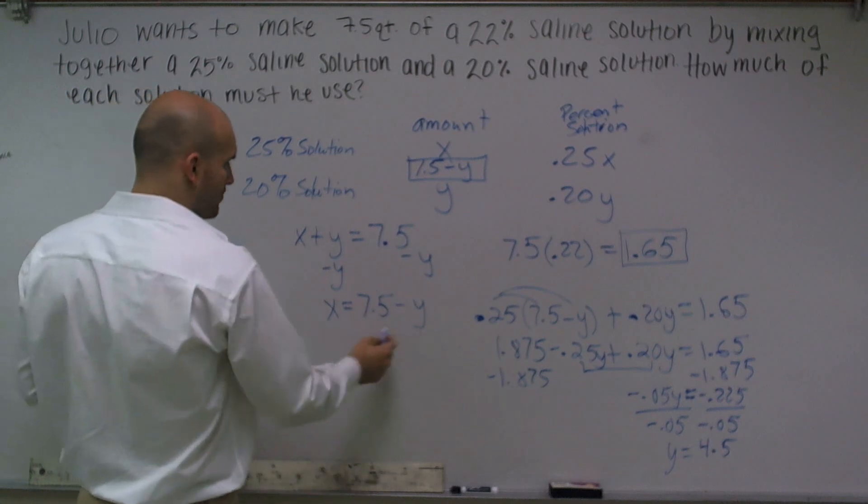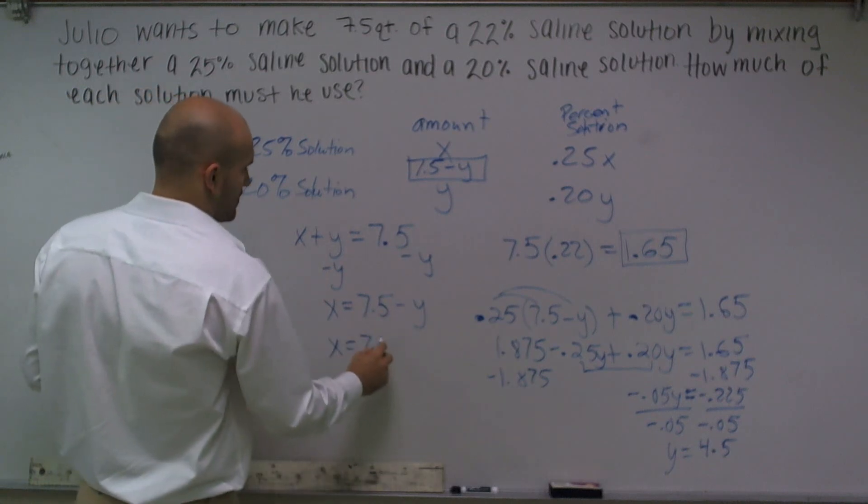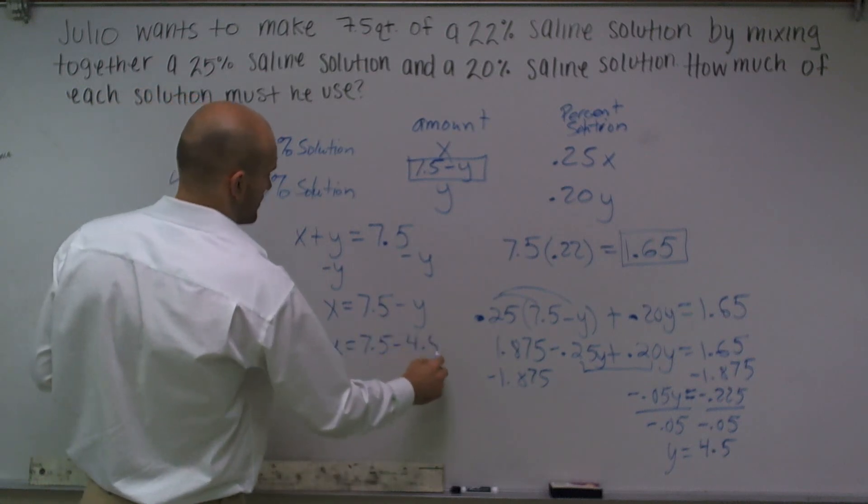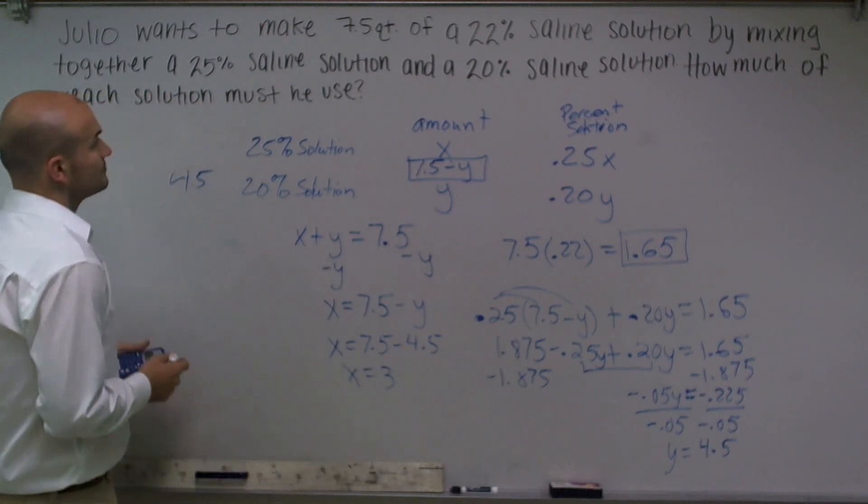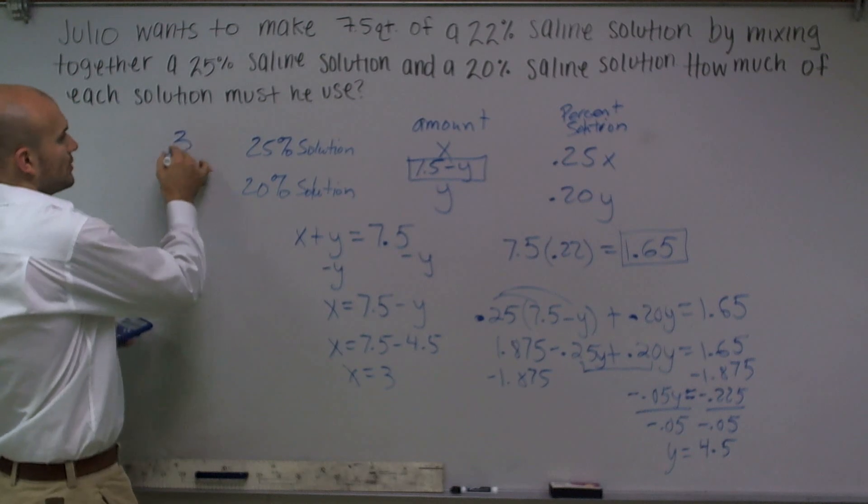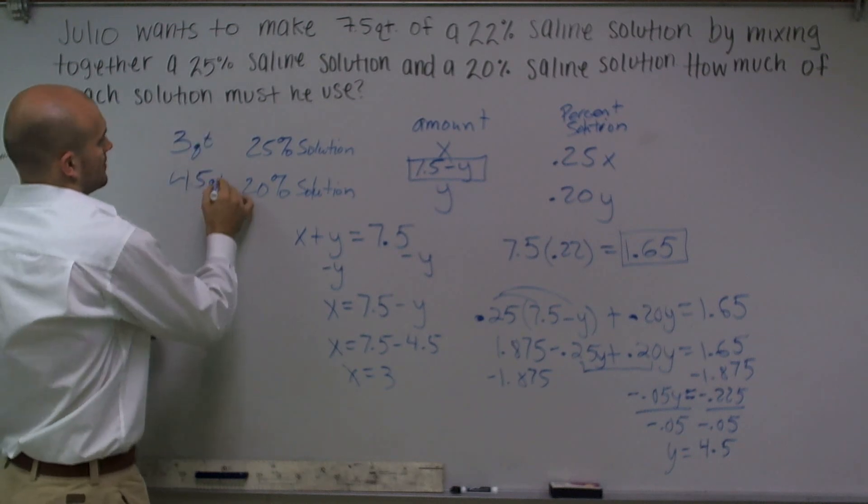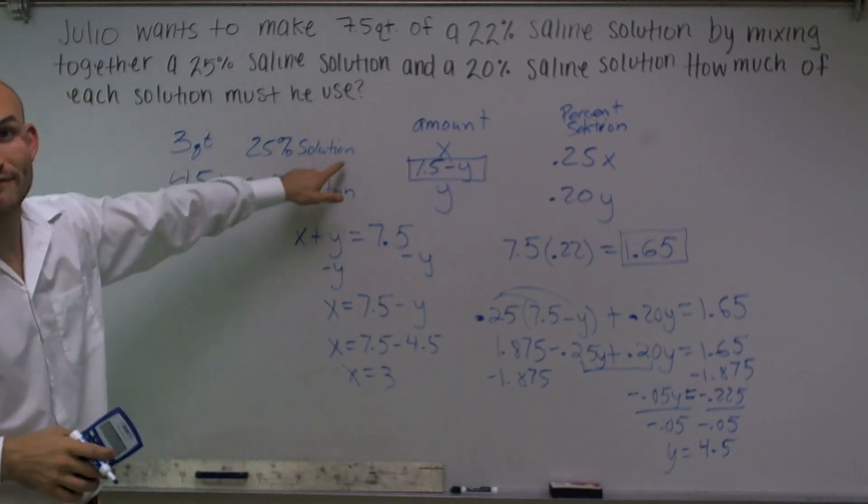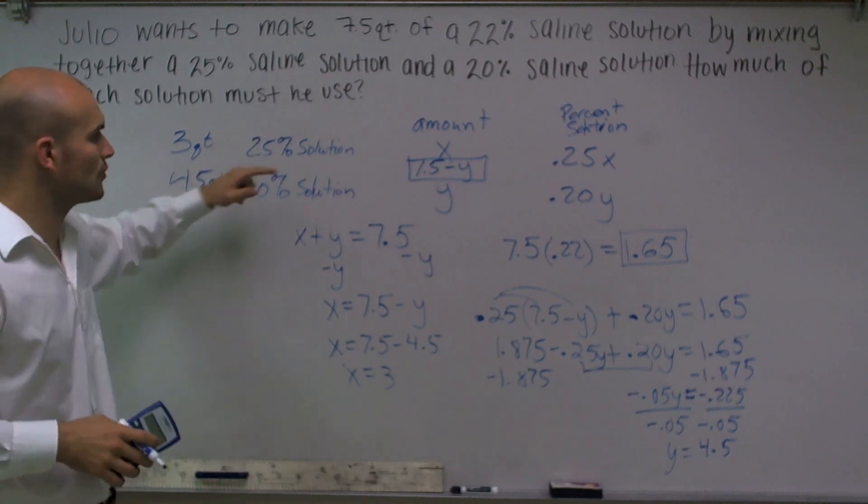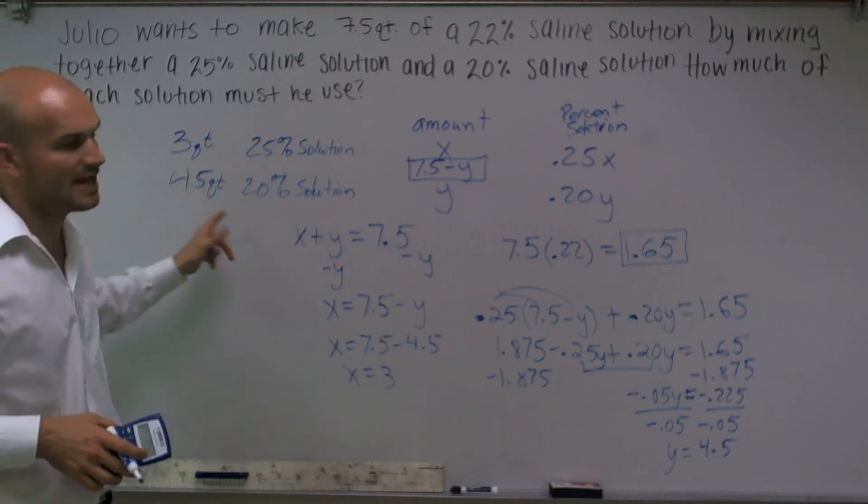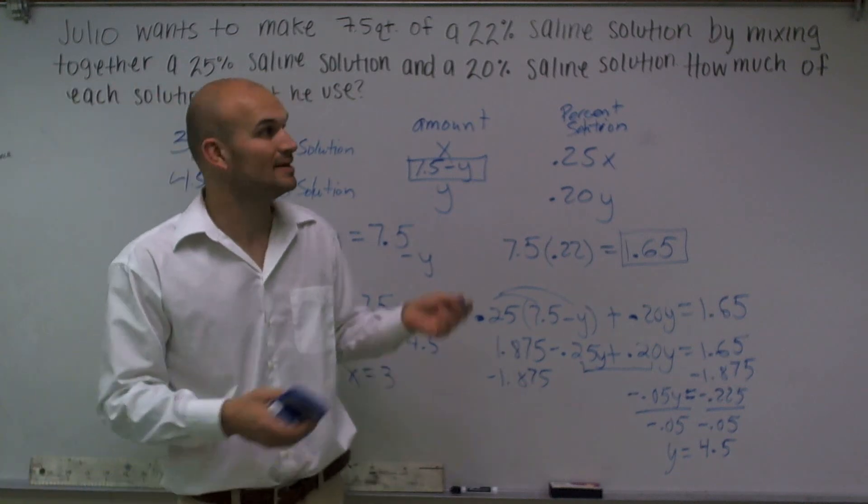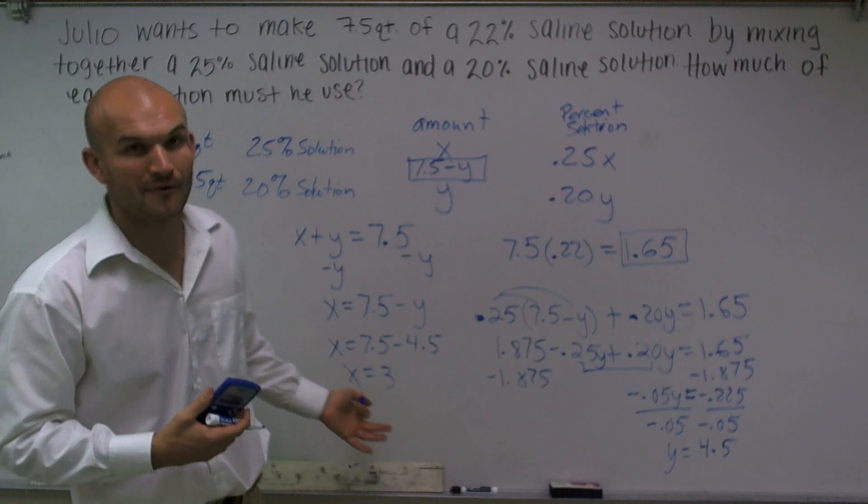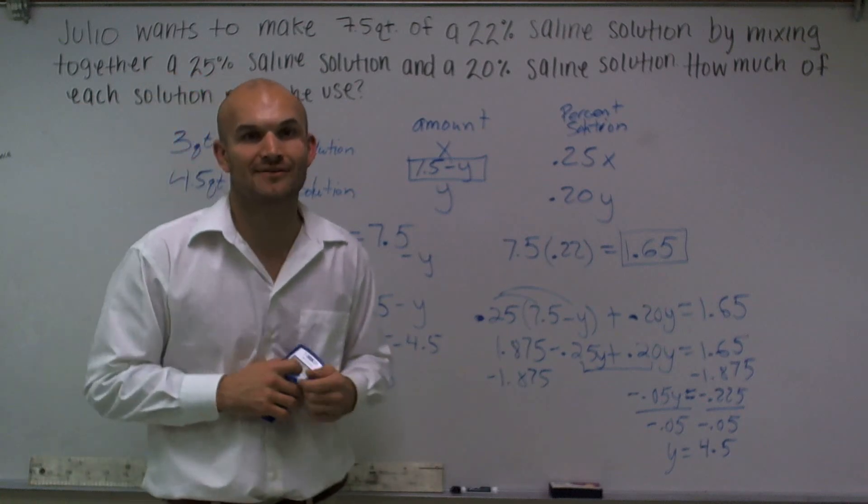Well, it's very simple. Just plug in 4.5 in for your y, and you get x equals 3. So therefore, I'm going to use 3 quarts of my 25% solution and 4.5 quarts of my 20% solution. So ladies and gentlemen, that's how you solve the mixture problem. When dealing like this, it is a little work for us, but hopefully that will help you understand.